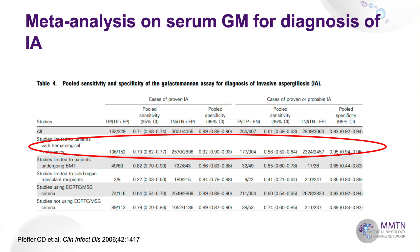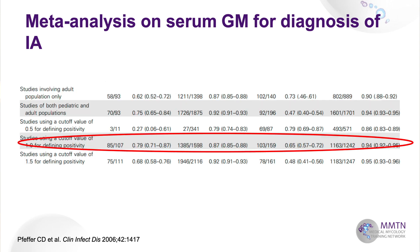Galactomannan itself could fill one lecture. A meta-analysis shows the sensitivity is about 0.7 in patients with hematological malignancies, but if you limit it to organ transplant recipients, the sensitivity is dismal — only 0.2. Regarding the cutoff: if you take 1, you have a sensitivity of 0.79 and specificity of 0.87. If you raise it to 1.5, you drop the sensitivity, although the specificity goes up.